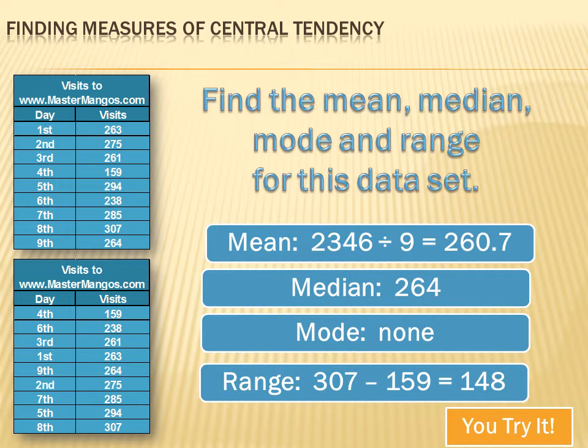The range tells you how dispersed your data is — is it tightly packed around the middle, or spread out over a lot of different varieties? In this case it's fairly spread out. If the range were only 20, all the values would be pretty close to the median, and you could expect things to consistently be near the median. But with a broad range, values will sometimes vary a great deal from the measure of central tendency.